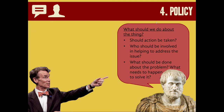The final stasis is policy. So now that we know what a thing is, how it's caused, and how severe it is, we might consider what to do about the thing. We need to consider if action should be taken — who should be involved in the action, whom does the responsibility fall upon to address a crisis in public education or in health care? What should be done about the problem? What needs to happen to solve this? Importantly, you've got to reach the previous three stasis to get here. If we don't agree about if something is an issue, we're going to get sidetracked and we can't start discussing how to solve it. So you can see how these stasis are sequential.